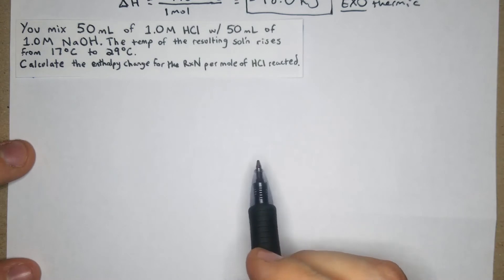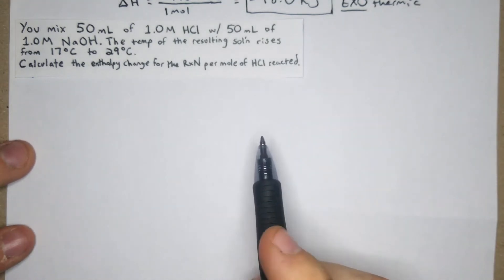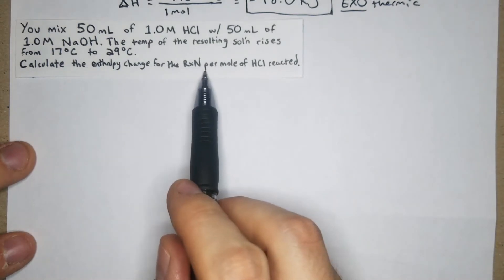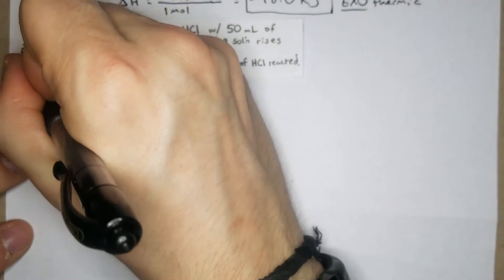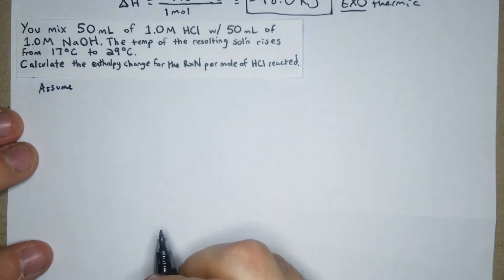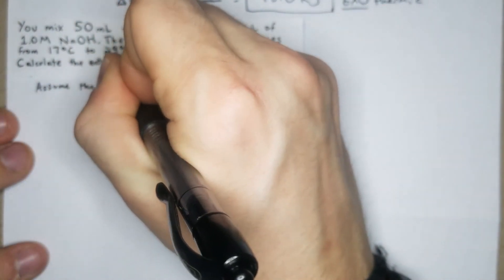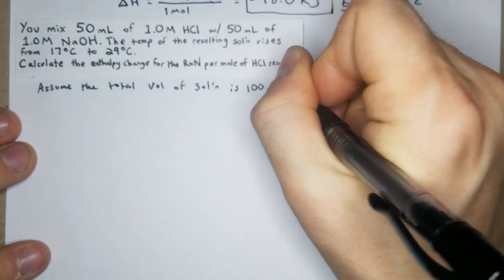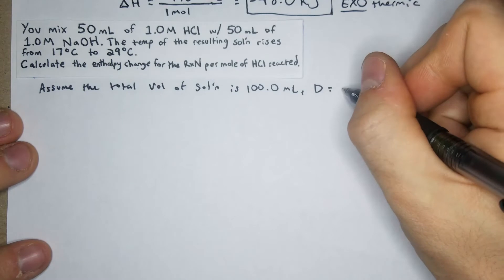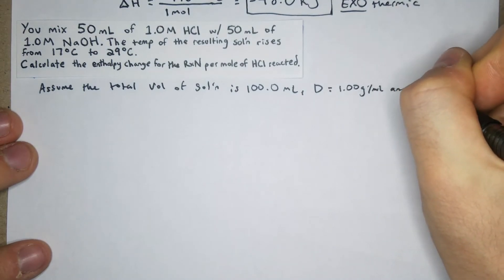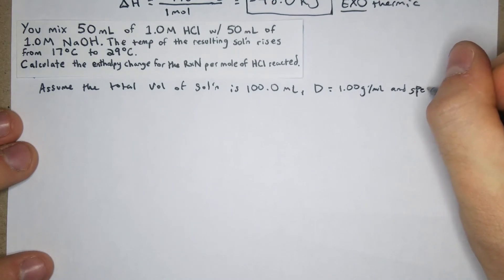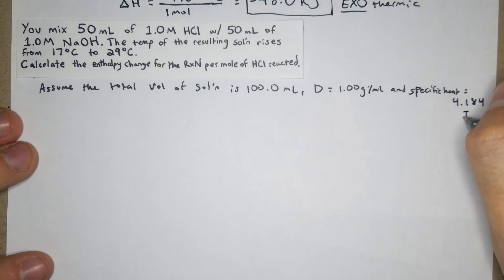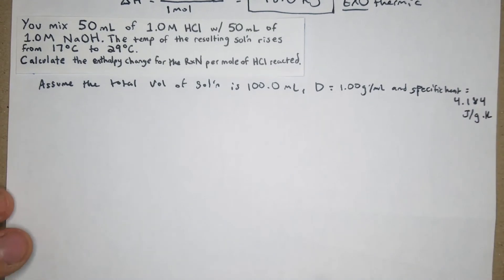Problem 2: You mix 50 mL of 1 molar HCl with 50 mL of 1 molar NaOH. The temperature of the resulting solution rises from 17°C to 29°C. Calculate the enthalpy change for the reaction per mole of HCl reacted. We'll assume total volume = 100.0 mL, density = 1.00 g/mL, and specific heat = 4.184 J/(g·K).